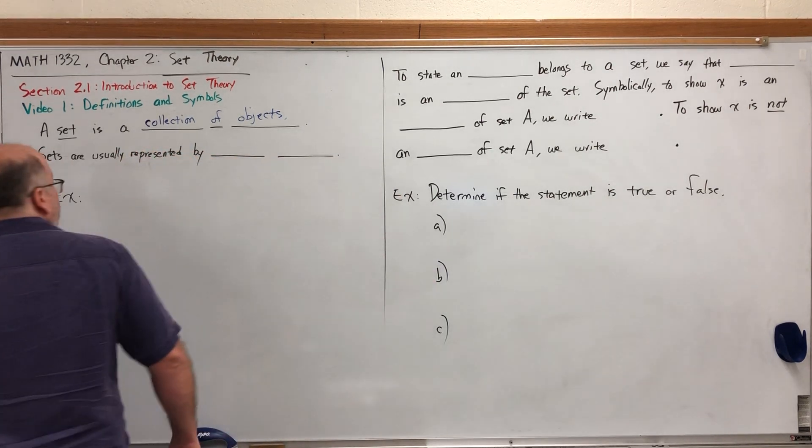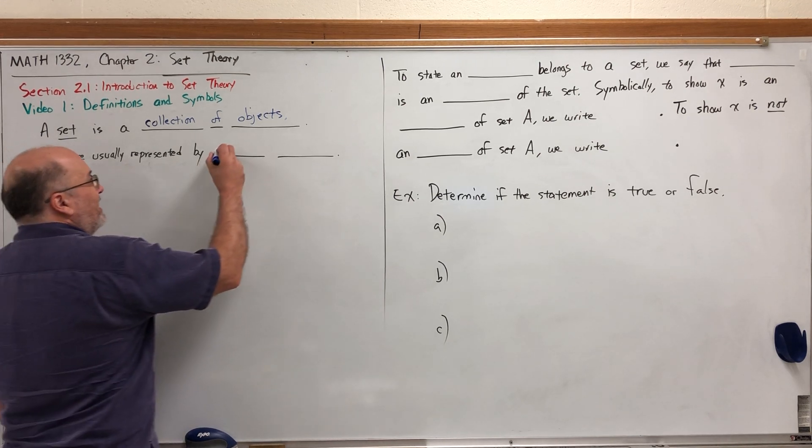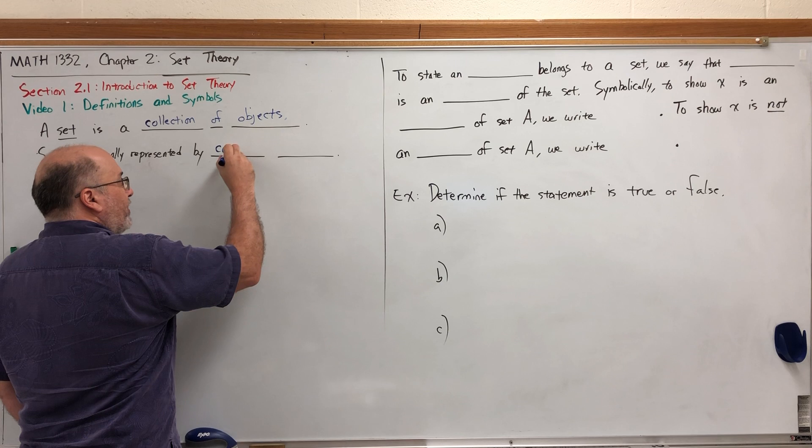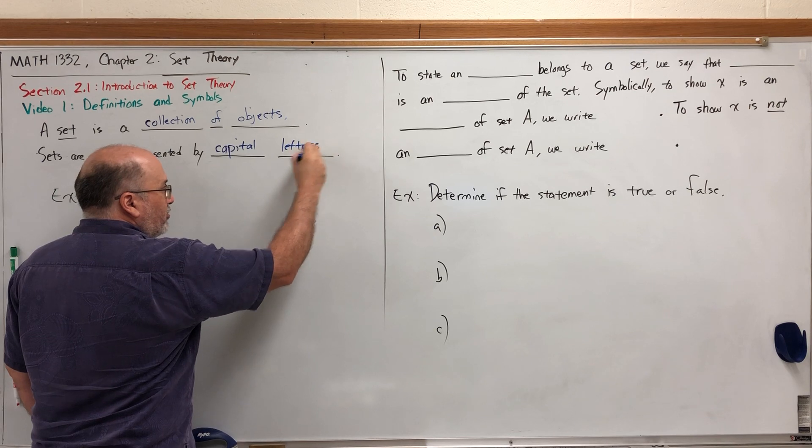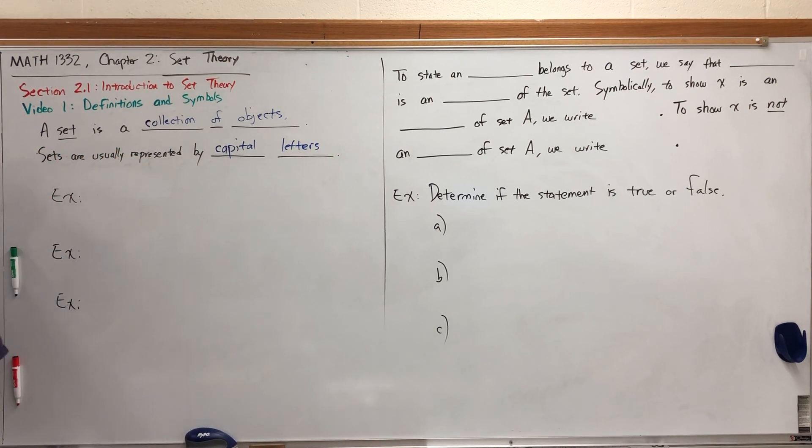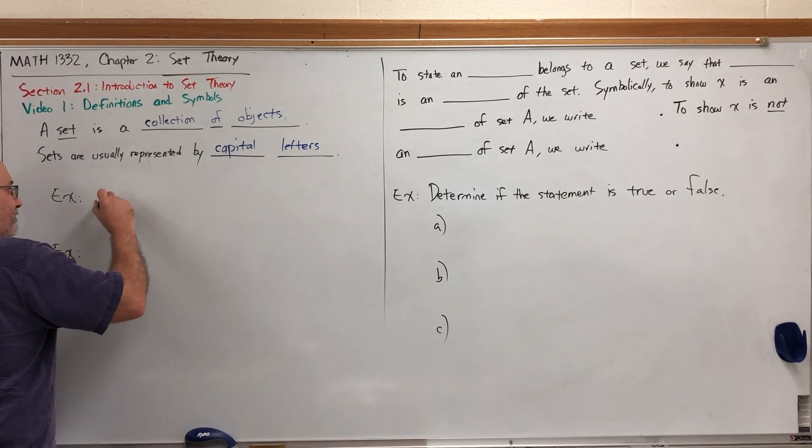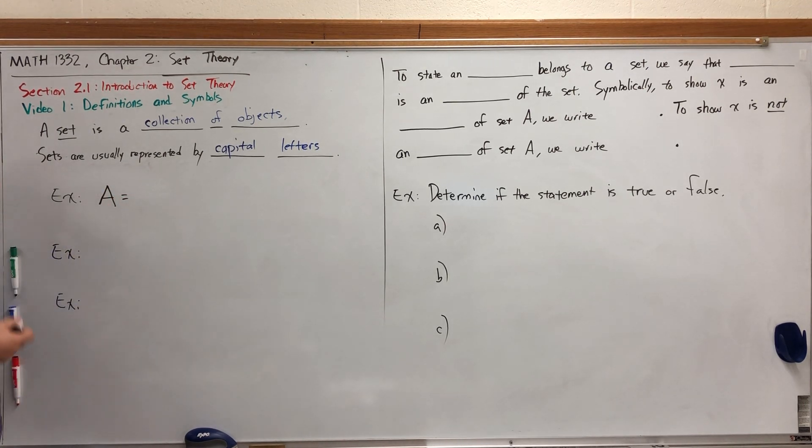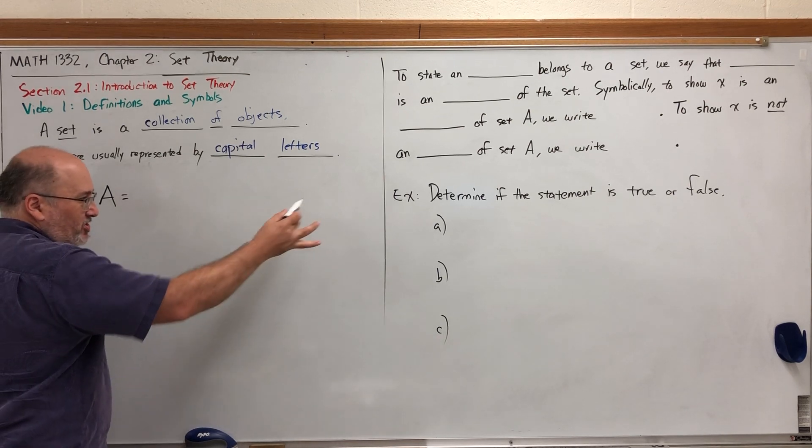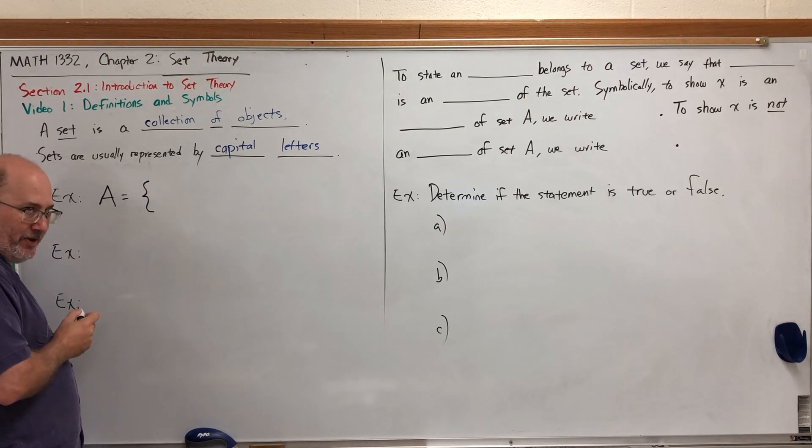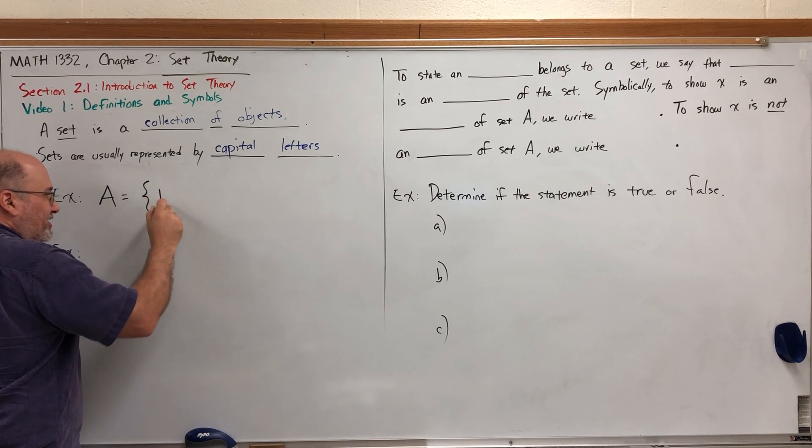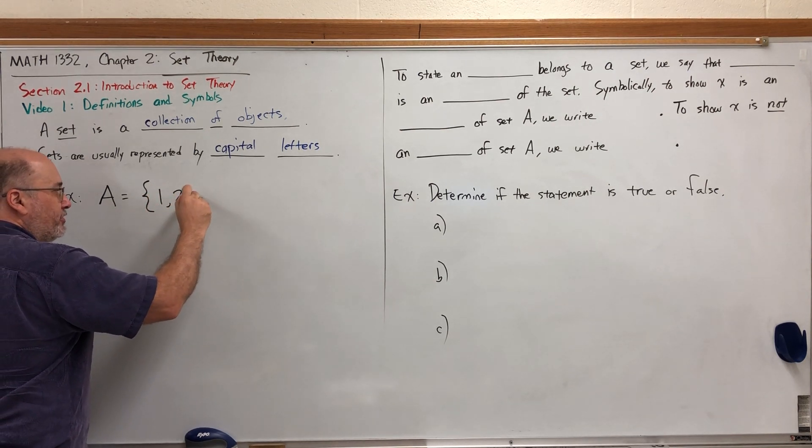Sets are usually represented generically by capital letters. For the rest of this chapter, you can assume that when you see a capital letter it represents a set or a collection of objects. Let's take a look at a few specific examples. For example, we could say that set A is equal to the following numbers.